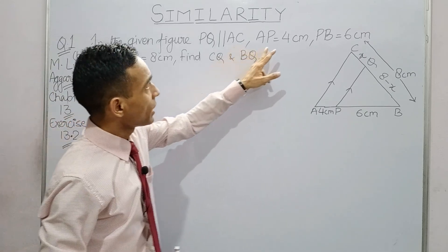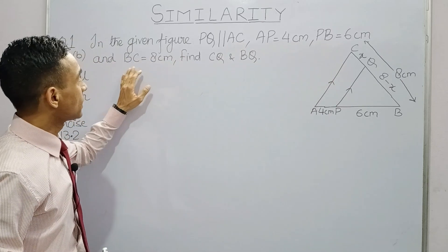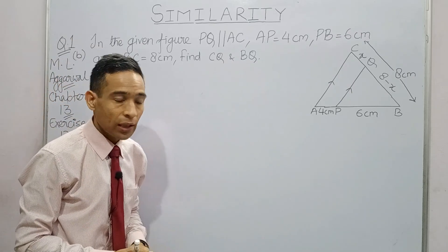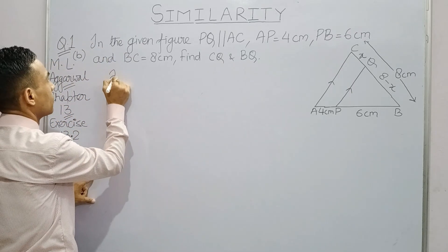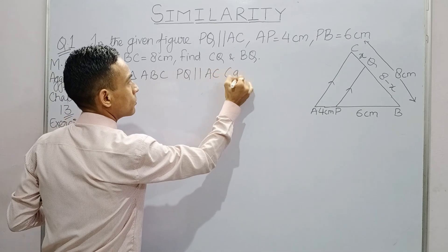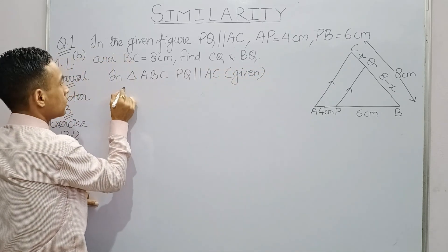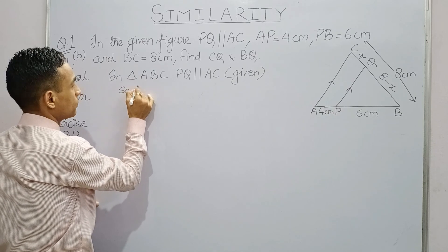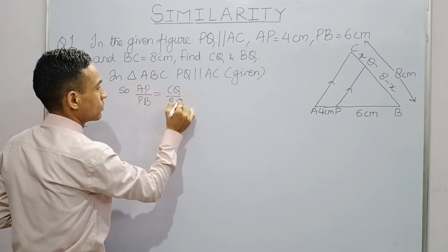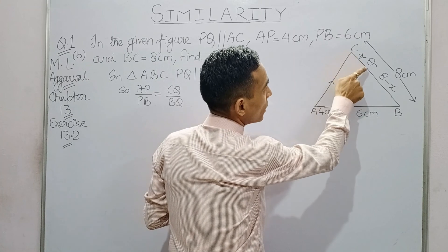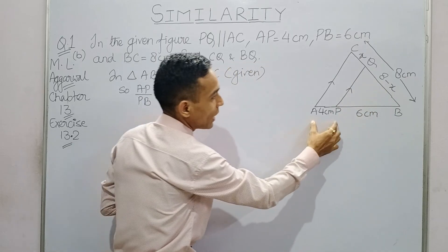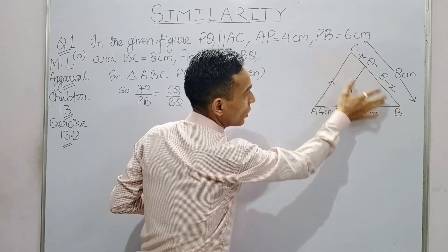In the given figure, we have values given: AP is 4 cm, PB is 6 cm, and BC is 8 cm. We need to find CQ and BQ. We are taking CQ as x, so BQ will be 8 minus x. Here I am using AP upon PB is equal to CQ upon BQ.